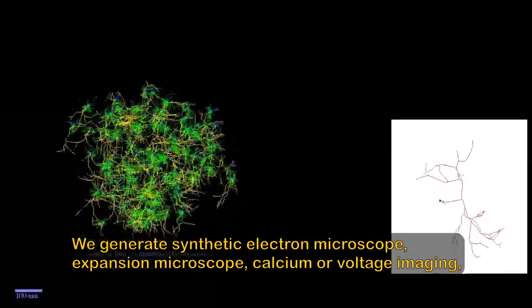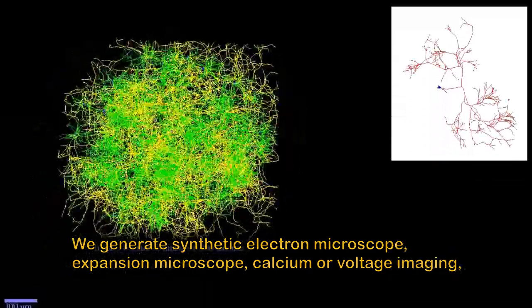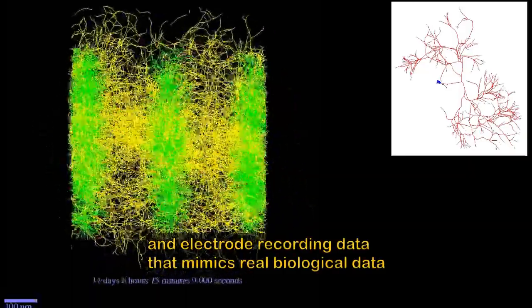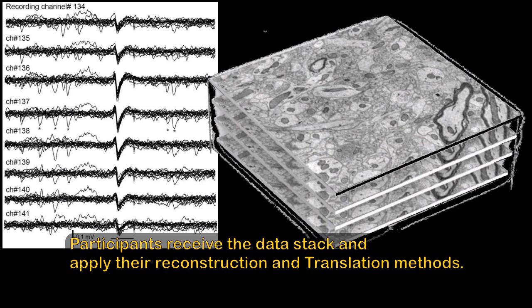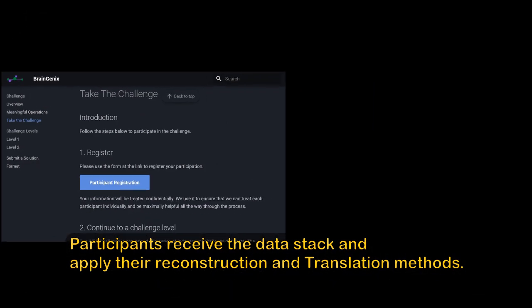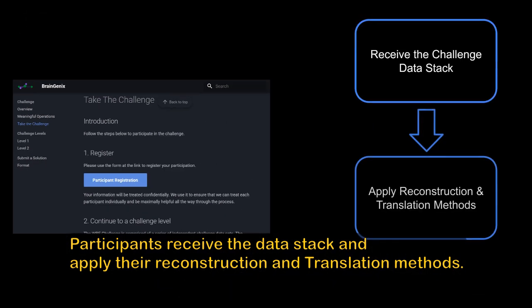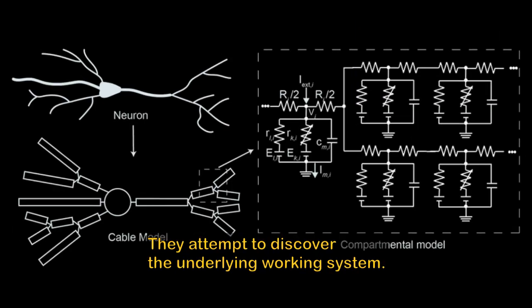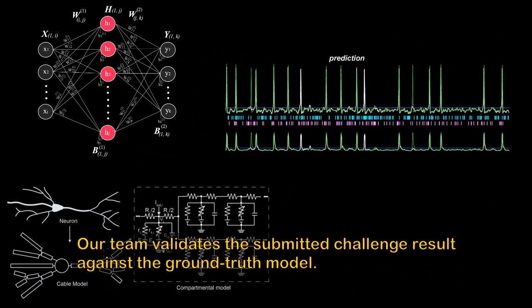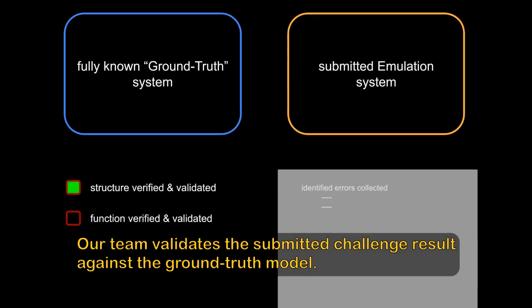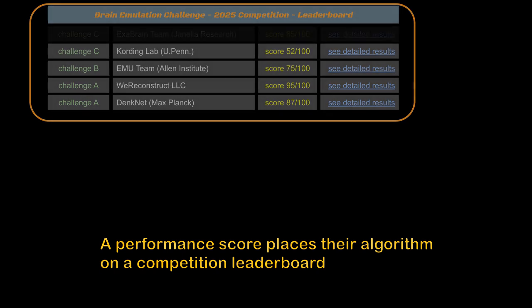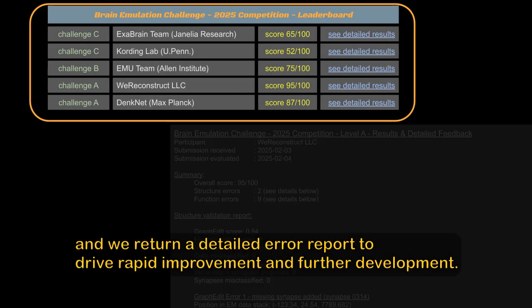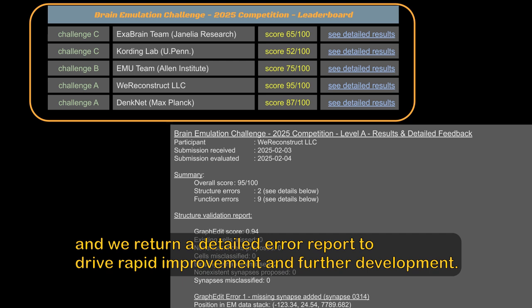We generate synthetic electron microscope, expansion microscope, calcium or voltage imaging, and electrode recording data that mimics real biological data, but is based on a fully known functional neuronal circuit. Participants receive the data stack and apply their reconstruction and translation methods. They attempt to discover the underlying working system. Our team validates the submitted challenge results against the ground-truth model. A performance score places their algorithm on a competition leaderboard, and we return a detailed error report to drive rapid improvement and further development.